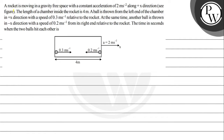Hello. Let us see the question. The question says: a rocket is moving in a gravity-free space with a constant acceleration of 2 meter per second square along the positive x direction. The length of the chamber inside the rocket is 4 meters. A ball is thrown from the left end of the chamber in the positive x direction with a speed of 0.3 meter per second relative to the rocket. At the same time, another ball is thrown in the negative x direction with a speed of 0.2 meter per second from its right end relative to the rocket. The time in seconds when the two balls hit each other is?